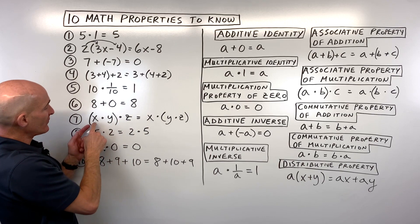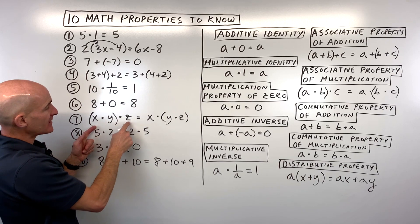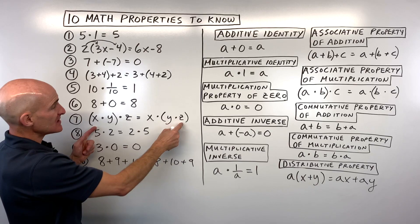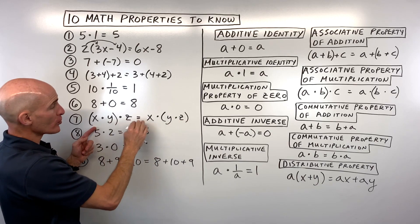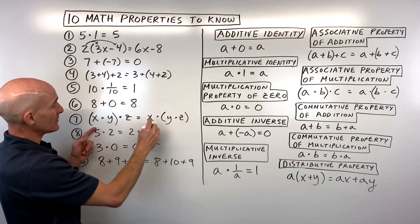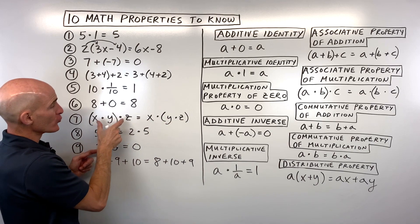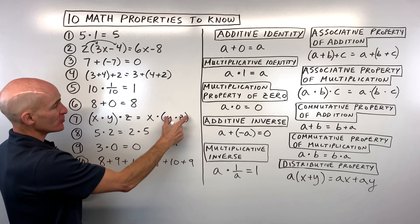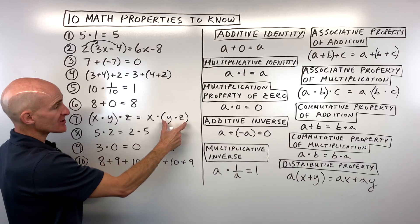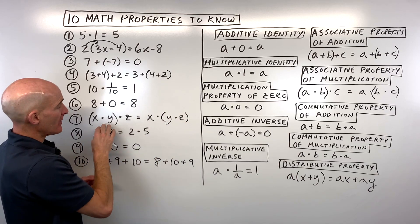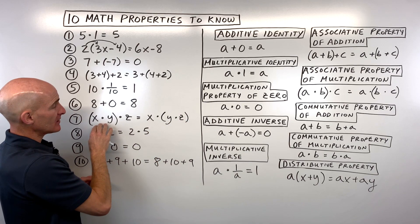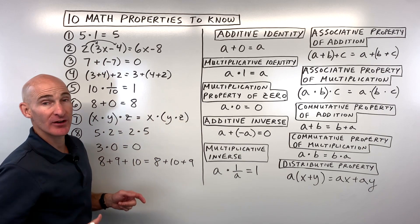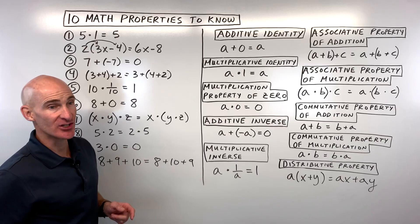For number seven, (x × y) × z = x × (y × z). Notice the order is the same but the grouping is different — here we're grouping the first two, there we're grouping the last two. That's the associative property of multiplication.